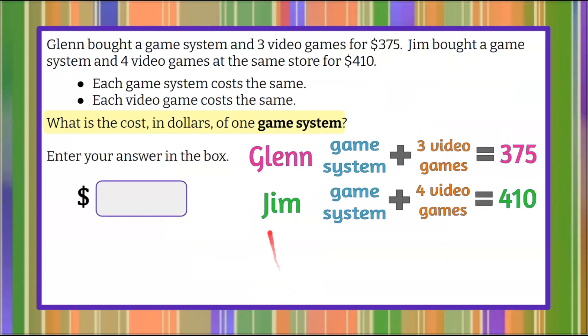Bring this back to our problem over here. And that tells me that the game system, the cost of one game system, is what I was solving for. g, our game system, is equal to 270. So to answer our question, the cost in dollars of one game system is $270.